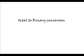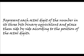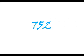Now we will discuss octal to binary conversion, and it is also very easy. For that, we just have to represent each octal digit of the number in its 3-bit binary equivalent and place them side by side according to the position of the octal digits. Suppose we have an octal number 7 5 2 and our task is to convert it into its binary equivalent.